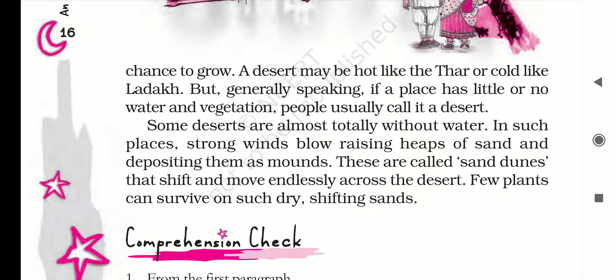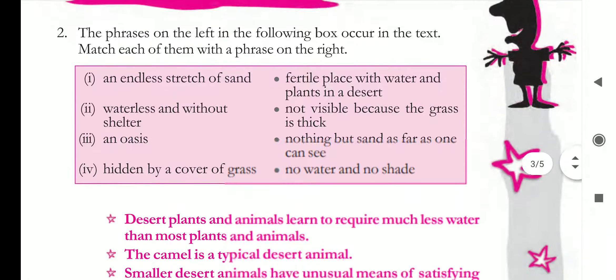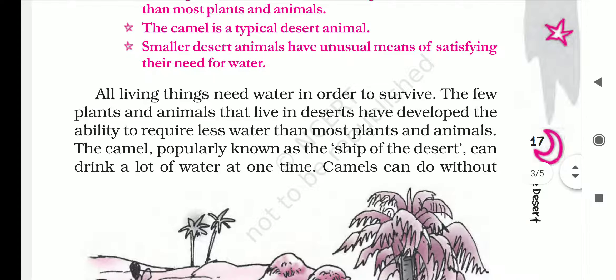In the first part we read about the desert and its types. Now in the second part we will continue with desert animals and plants. All living things need water in order to survive. The few plants and animals that live in deserts have developed the ability to require less water than most plants and animals. The camel, popularly known as the ship of the desert, can drink a lot of water at one time.